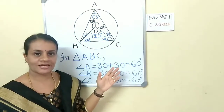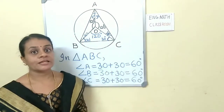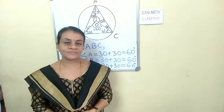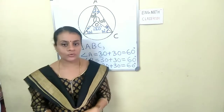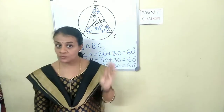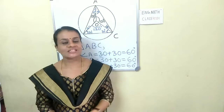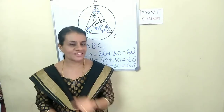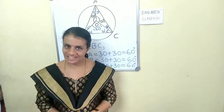So triangle ABC is an equilateral triangle. Let me wind up the class now. Practice these problems well. See you again with another part of this series.